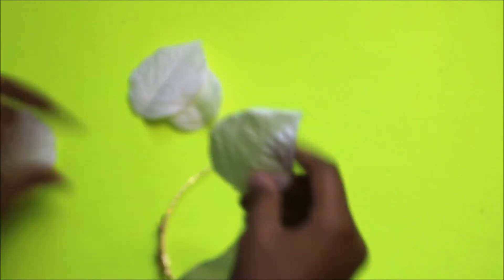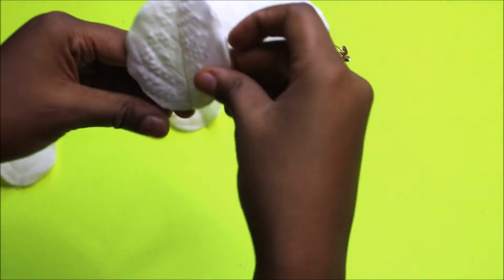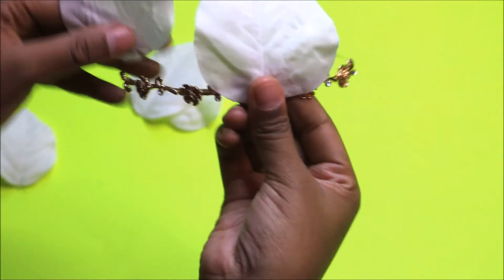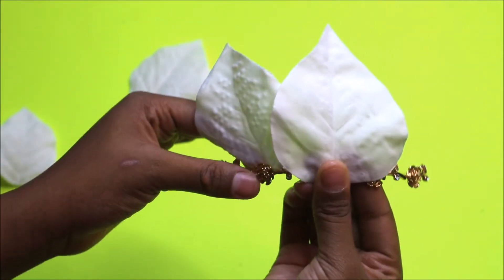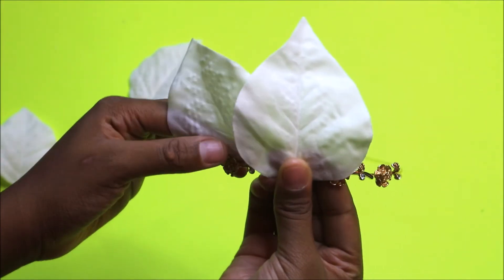Moving on to our medium petals, I'm going to do the same thing but only on the inside of the crown because I still want the gold flowers on the outside to show.